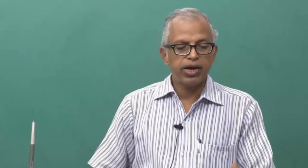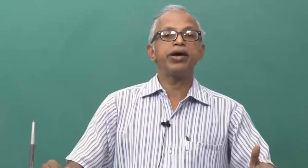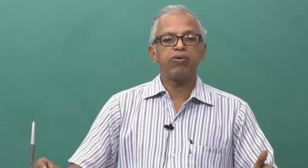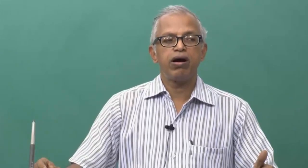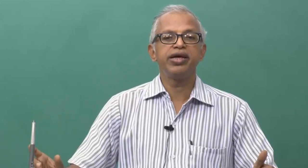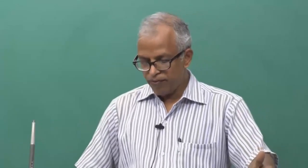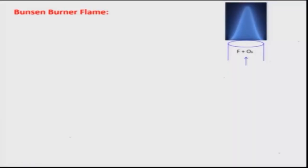So let us look at a Bunsen burner flame. You might recall that the Bunsen burner was devised by Bunsen around 1855. It is he who really discovered the premixed flame. A typical flame in a Bunsen burner is like this — it is a tube having a wall thickness in which fuel and oxidizer are premixed thoroughly at a certain equivalence ratio phi.